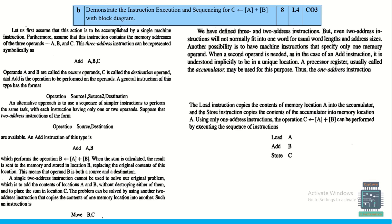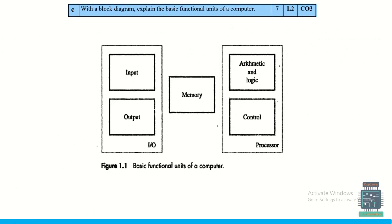To demonstrate instruction execution and sequencing for C = A + B with a block diagram: write the block diagram and explain the procedure for executing those instructions. There are three different ways: using three-address, two-address, or one-address instructions. The diagram carries three to four marks and the different methods carry four marks.